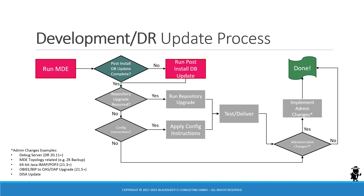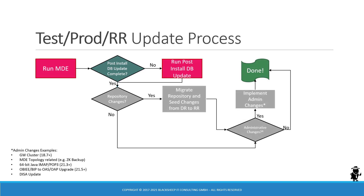The development environment may have additional steps related to running the repository upgrade or applying configuration instructions that you need to test and deliver. Administrative changes could range from setting up the debug server if you are coming from a version before 20.11, or setting up 64-bit Java if coming from a version prior to 21.3. Test and production environments have a shorter path, but you need to use the migration application to migrate any repository changes, and complete any administrative changes before declaring the update a success. Thanks for watching and take care, bye bye.